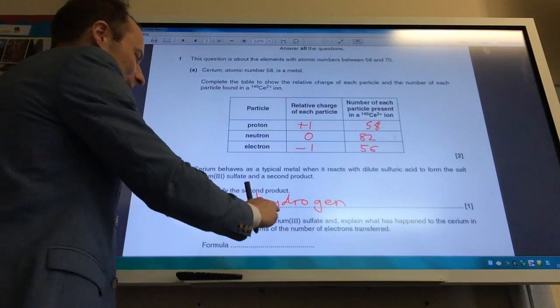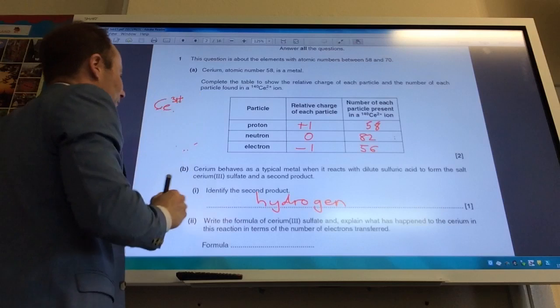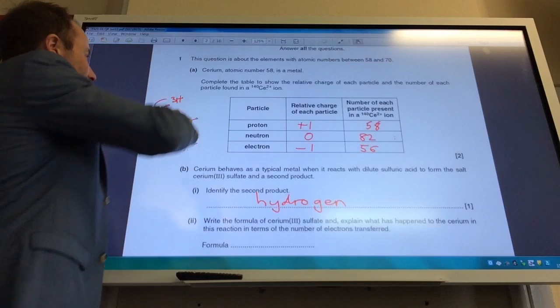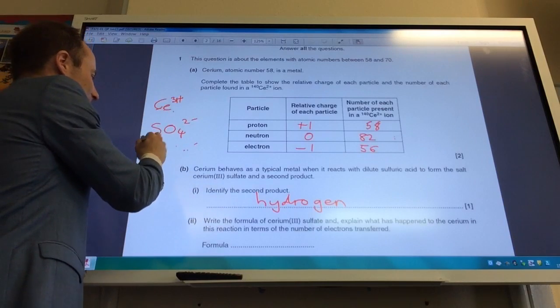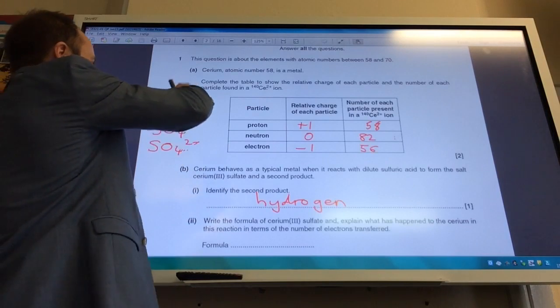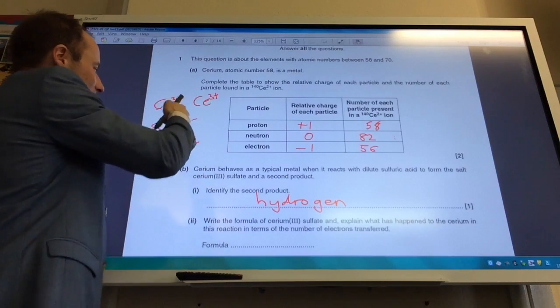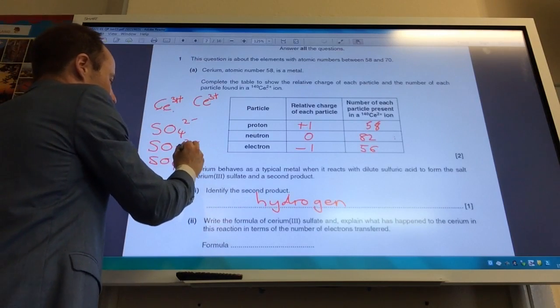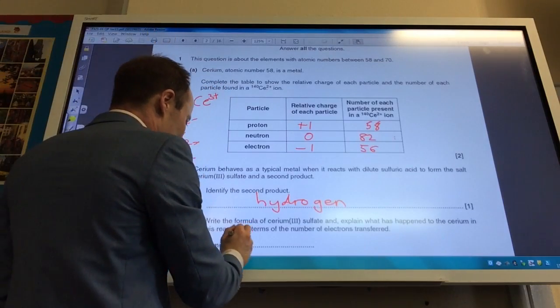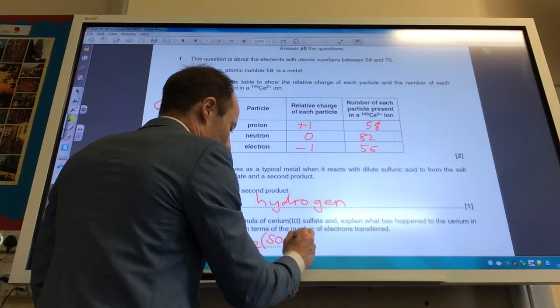Write the formula of cerium 3 sulfate. So cerium 3 plus, and then sulfate is SO4 2 minus. I've got too many pluses, so let's add another SO4 2 minus. Four minuses, three pluses, so let's have another cerium. I've now got six pluses, so I need another sulfate. Now I've got six minuses, six pluses, so the formula is going to be Ce2(SO4)3.